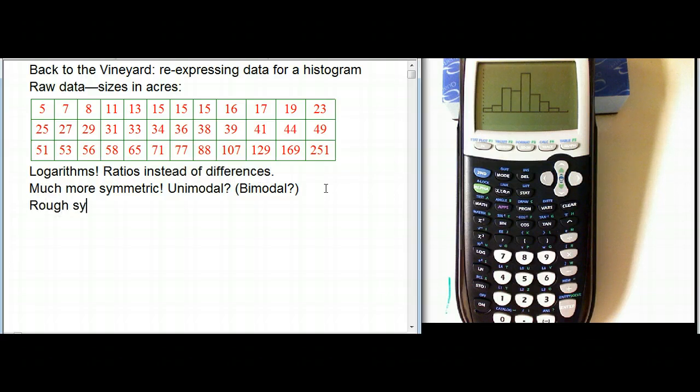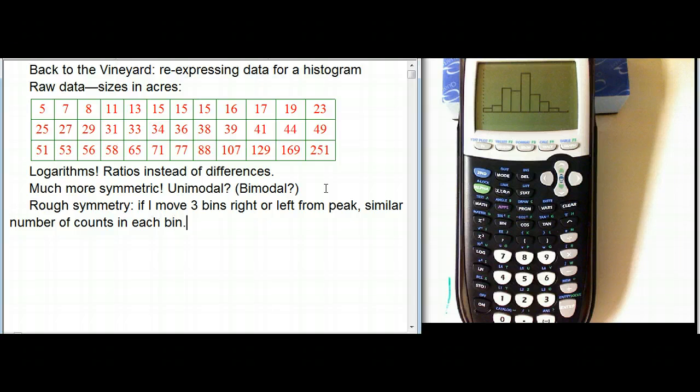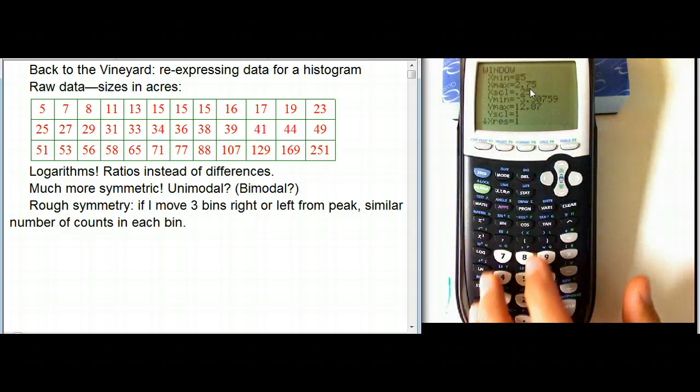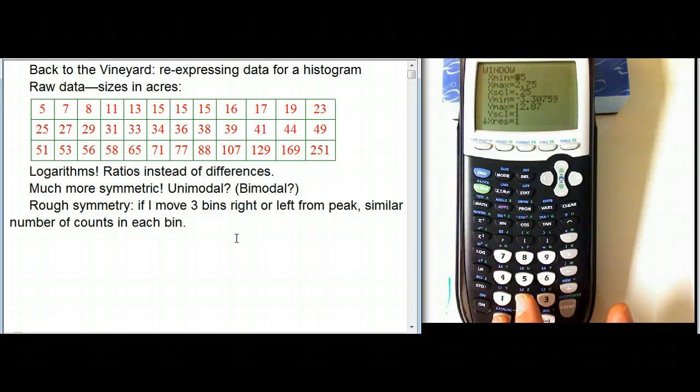if I move, let's say, three bins right or left from peak, similar number of counts, not the same, but similar number of counts in each bin. So what does that mean? Move three bins right or left. Remember, each bin, let's look at the window again, that's the scale, is the width, the bin size, .25. So,